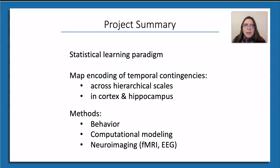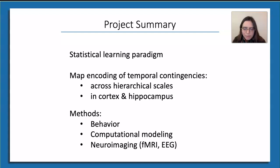We're proposing a new avenue for investigating these questions. In our approach, we will examine the learning process as humans are exposed to sequences of artificial stimuli that are structured at both slow and fast temporal scales. We'll use this to map the encoding of temporal contingencies at different scales in both cortex and the hippocampus. Importantly, through the use of artificial stimulus sequences, we're better able to control for the types of processes that humans may be engaging in while exposed to the stimulus streams.